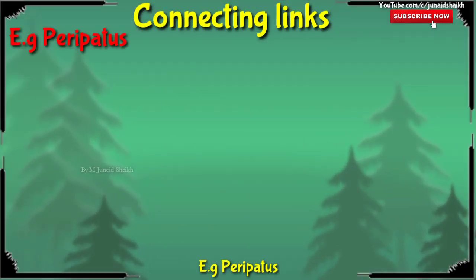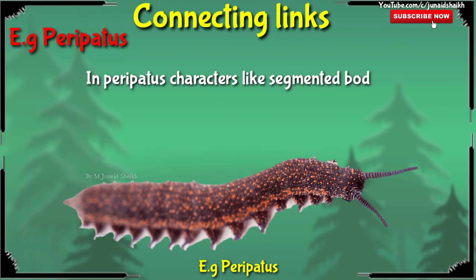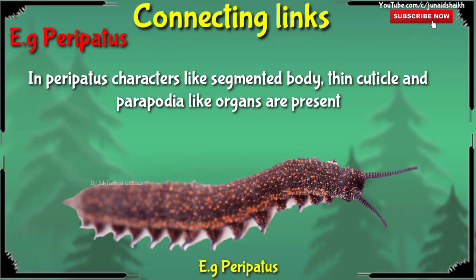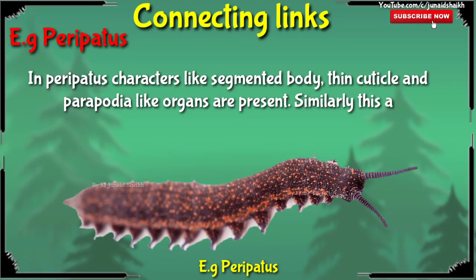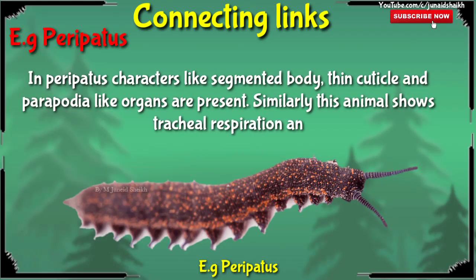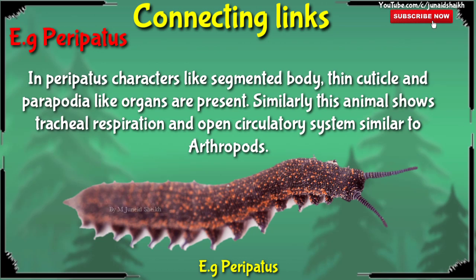The first example is Peripatus. In Peripatus, characters like a segmented body, thin cuticle, and parapodial-like organs are present. Similarly, these animals show tracheal respiration and open circulatory system similar to arthropods. This indicates that Peripatus is the connecting link between Annelida and Arthropoda.